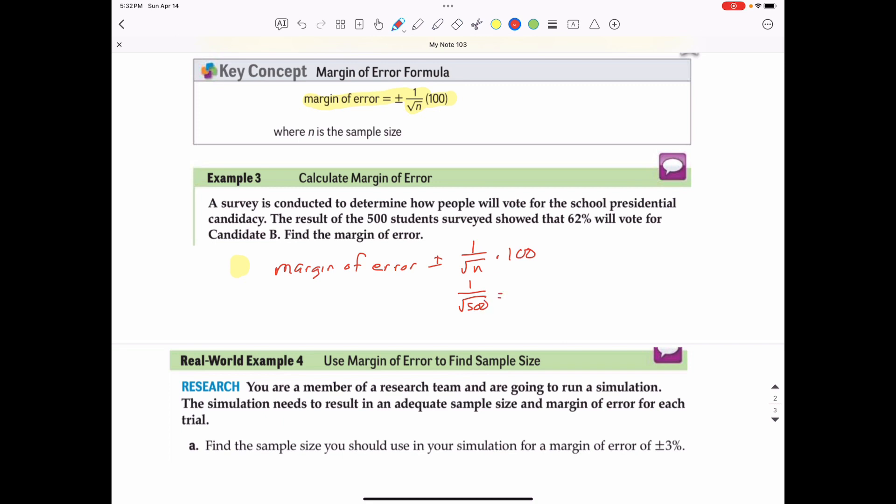We'll take 1 divided by the square root of 500. That's something you would definitely need to do on your calculator. When you take 1 divided by the square root of 500, approximately 0.044, multiply that times 100 by moving the decimal 2 to the right, which means we have a margin of error of plus or minus 4.4 percent.